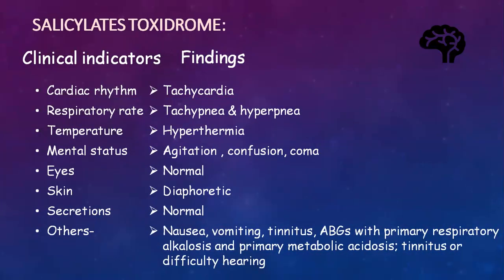In salicylate toxidrome, we will find tachycardia, and the respiratory rate will be very high and fast — tachypnea and hyperpnea (very deep breathing). Temperature will be increased. Mental status: agitation, confusion, and coma. Eye and pupil changes are normal. Skin is diaphoretic, secretions are normal. Other changes include nausea, vomiting, tinnitus or difficulty hearing, and ABGs showing primary respiratory alkalosis and primary metabolic acidosis.